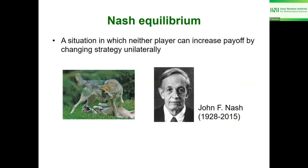The equilibrium situations are called Nash equilibria, named after John Nash, who also worked in Princeton. A Nash equilibrium is a situation in which no player can increase its payoff by changing strategy unilaterally — that is, no coordination is assumed. In microbiology especially, the Nash equilibrium concept is very relevant because there is less communication and coordination than in human society, making it hard for microorganisms to coordinate simultaneous strategy changes.